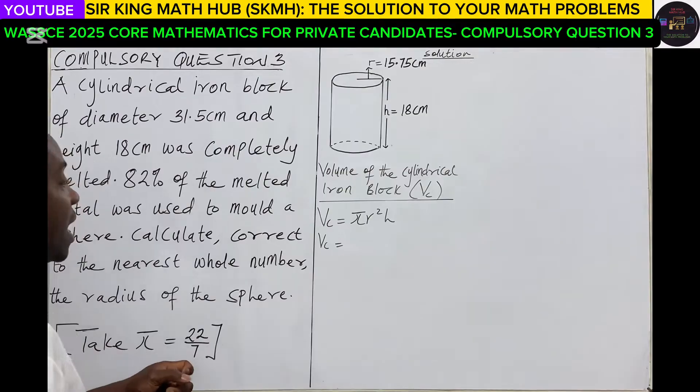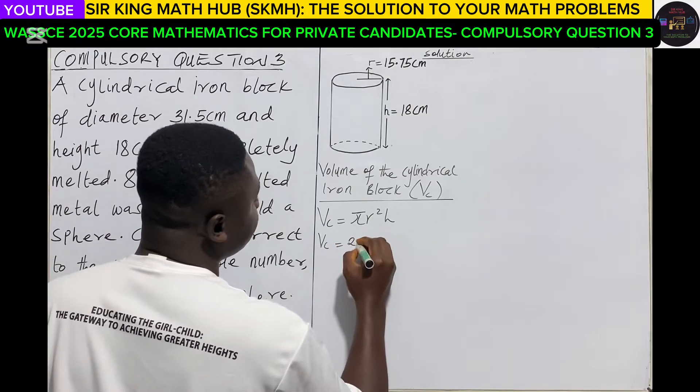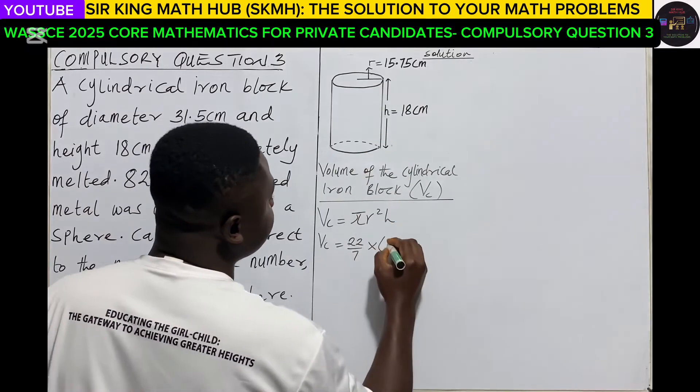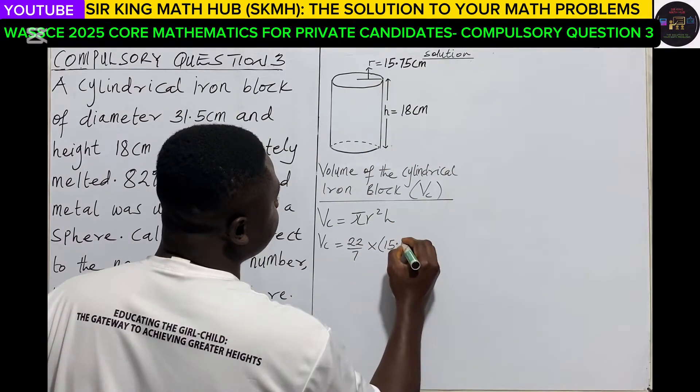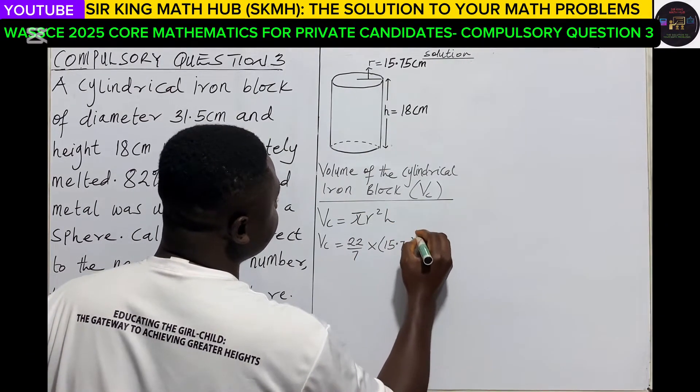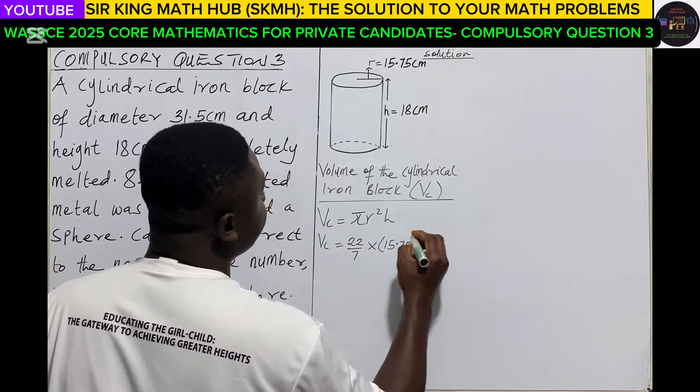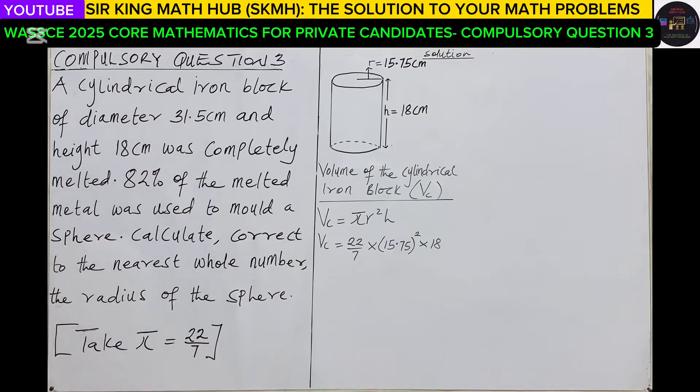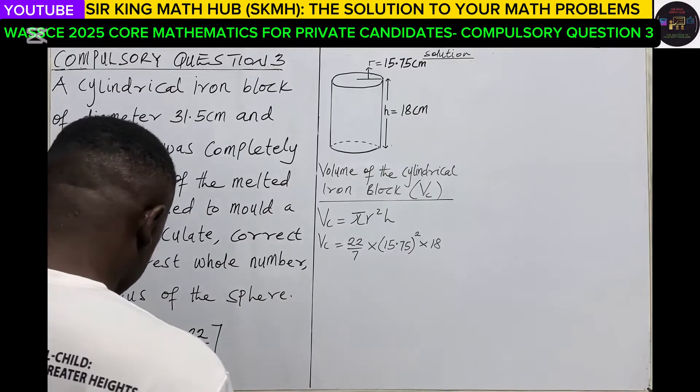So let's do the substitution. We have to take π as 22/7. We know our radius as 15.75 centimeters, so squared, multiply by the height which is 18.